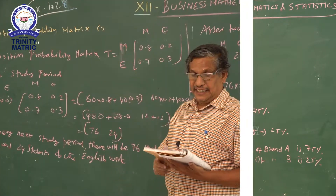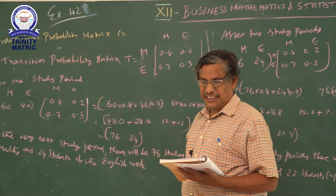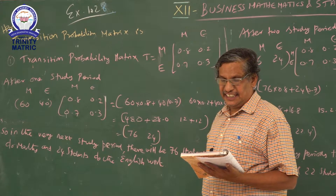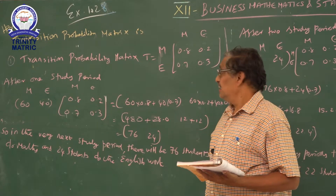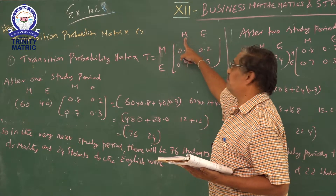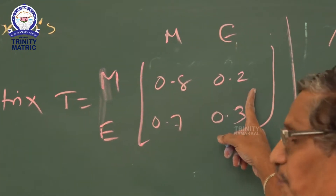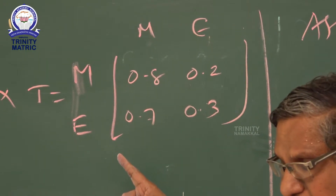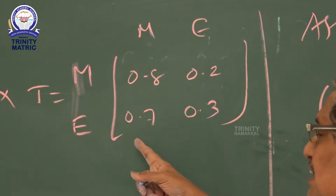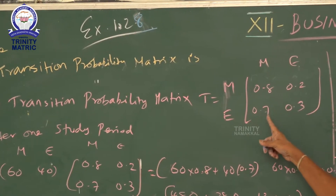Next sum: 80 percent of students who do math work during one study period will also do math work in the next study period. 30 percent of students who do English work during one study period will do English in the next. There are two subjects: math and English. Math: 80 percent (0.8) stays in math, so 20 percent (0.2) moves to English. English: 30 percent (0.3) stays in English, so 70 percent (0.7) moves to math. The transition probability matrix is: 0.8, 0.2 / 0.7, 0.3.